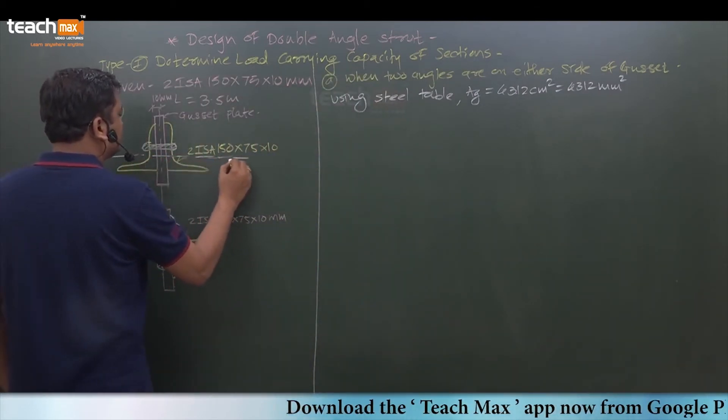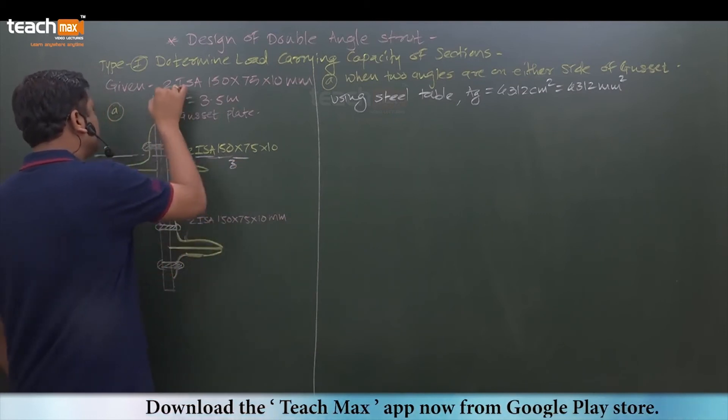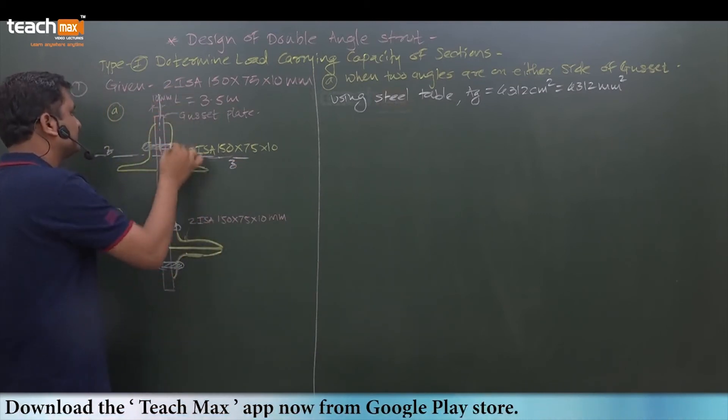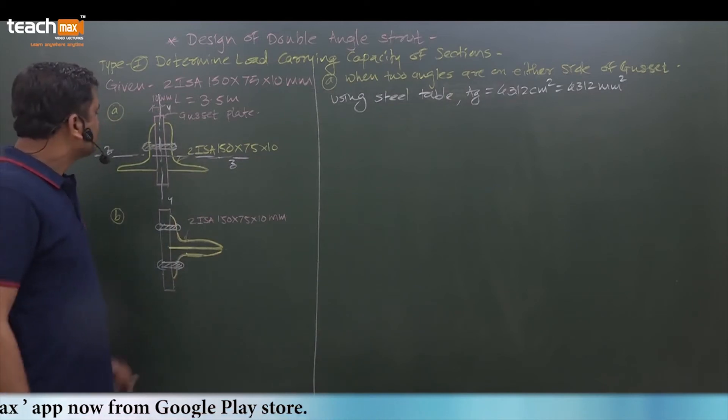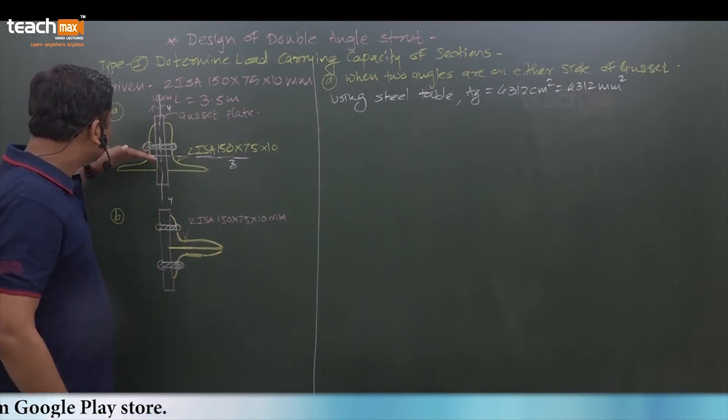If you observe the zz axis, this one is zz axis, and this one is yy axis for this example. If you observe for single angle, whatever be the zz axis remains same for double angle also.